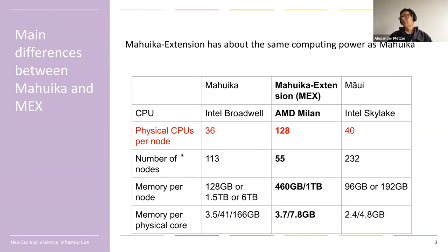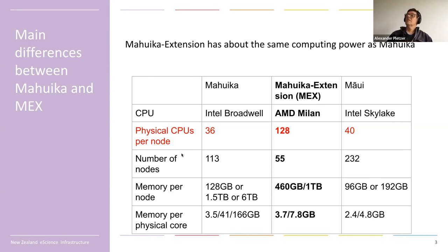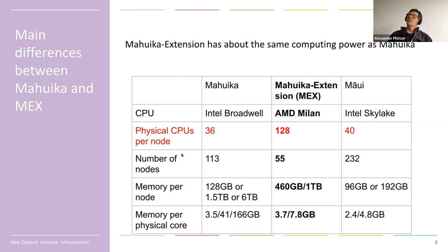But the most striking difference — the one I want you to remember — is that on the left-hand side we essentially had nodes, and one node has a certain number of physical processing units. For Mahuika: 36. For Maui: 40. Very similar numbers. But now we're going to go up to 128. So that's a big change.